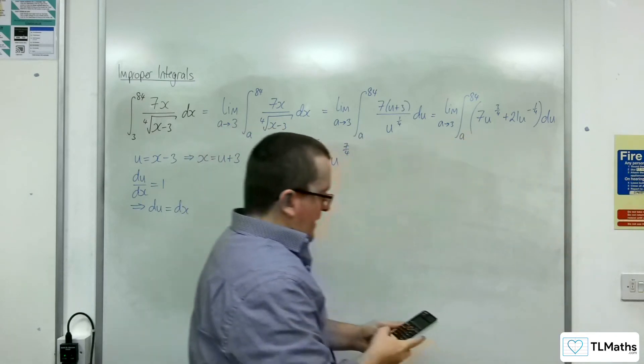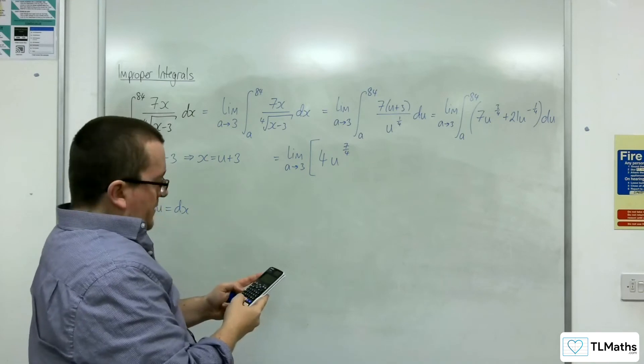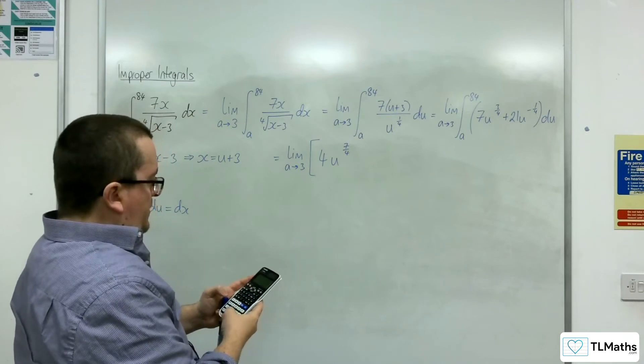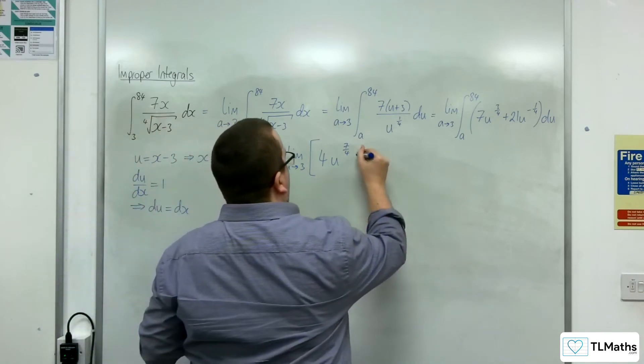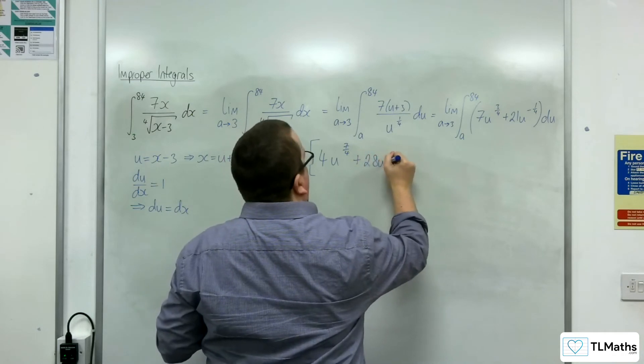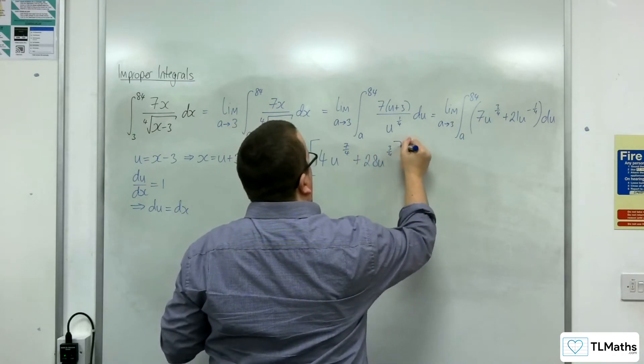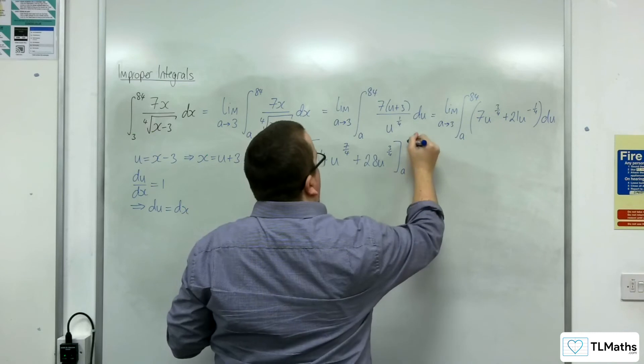So what's that? That's 21 divided by 3 quarters, which is 28, so plus 28u to the 3 quarters, evaluated between a and 84.